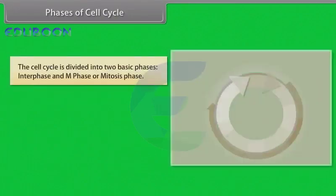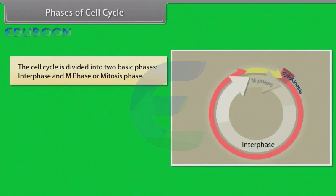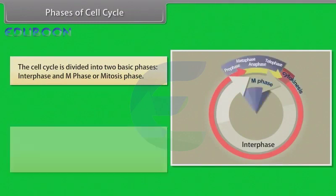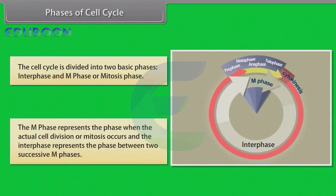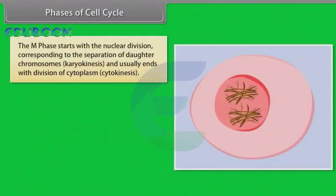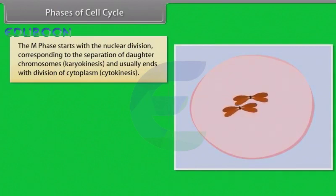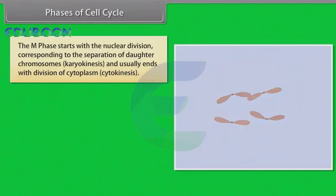Phases of cell cycle. The cell cycle is divided into two basic phases: interphase and M phase or mitosis phase. The M phase represents the phase when the actual cell division or mitosis occurs, and the interphase represents the phase between two successive M phases. The M phase starts with nuclear division corresponding to the separation of daughter chromosomes, karyokinesis, and usually ends with division of cytoplasm, cytokinesis.